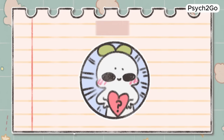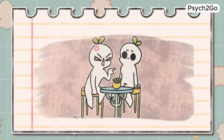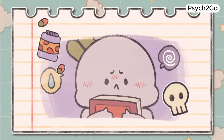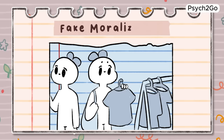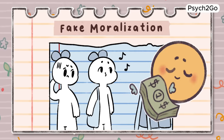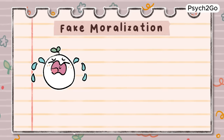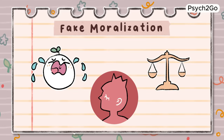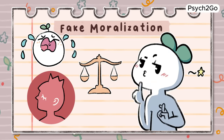Emotional blackmail. If a manipulator knows what affects you emotionally, they may try to use that against you. A common form of emotional blackmail is threatening self-harm. Fake moralization. When a manipulator knows you will disapprove of their true intentions, they may disguise them as virtuous — claiming to be oppressed, flaunting their good virtues, or telling others what is and isn't good are all forms of fake moralization.